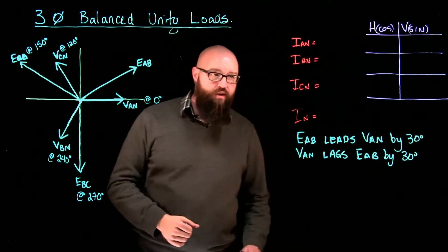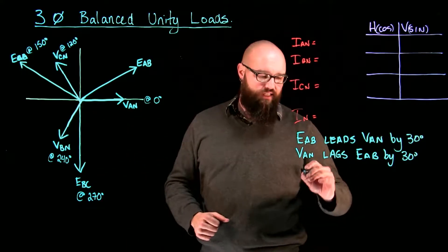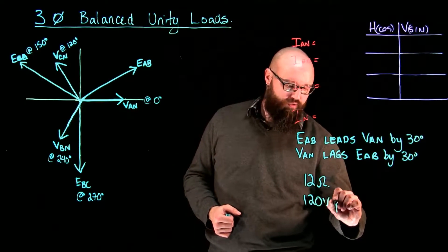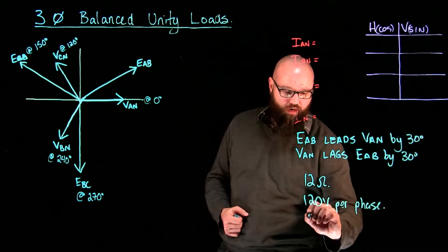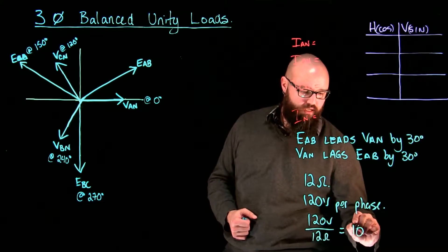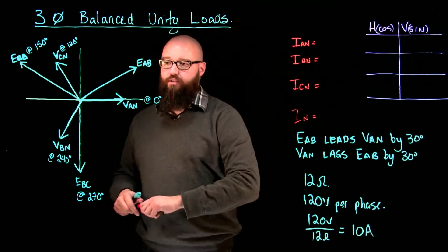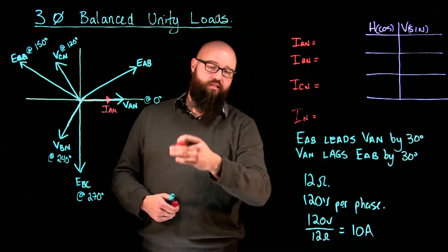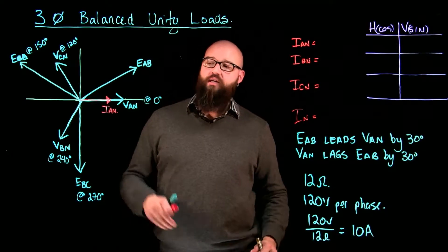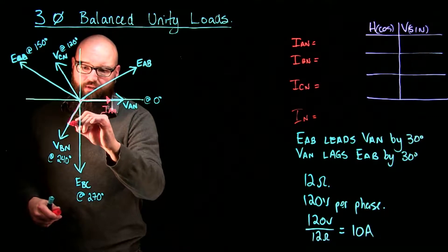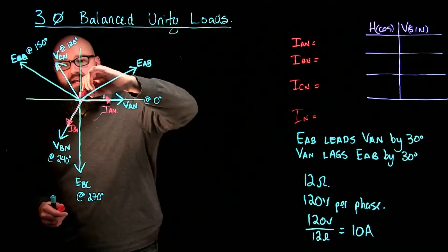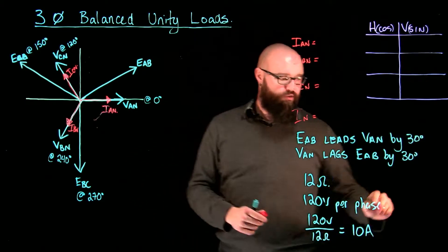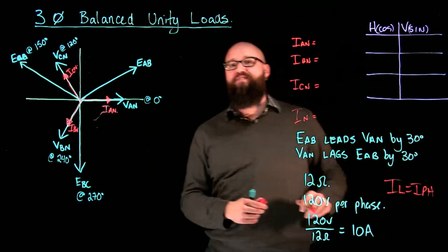What I want to look at is the actual currents. Let's say each one of these phases has a 12 ohm impedance. I know that the phase voltage is 120 volts per phase. So if we use Ohm's law, we can calculate 120 volts divided by 12 ohms of impedance per phase equals 10 amps per phase. So let's plot that — there's my I A to N. The reason it's in phase is because it is a unity load — it is resistive, it could be a heater or something like that. My phase current is in phase with my phase voltage, which means I line equals I phase, so I also have 10 amps per line.